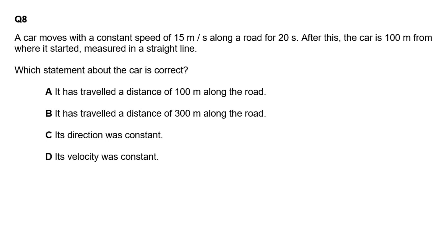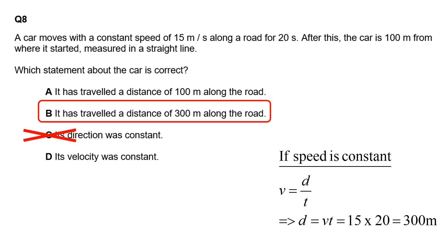The car moves with constant speed of 15 meters per second for 20 seconds. After this the car is 100 meters from where it started measured in a straight line. Which statement is correct? If the speed is constant over 20 seconds it should travel a total distance of 300 meters. We can rule out option C because if direction was constant it would have traveled 300, not be only 100 meters away. We can see it has traveled a total distance of 300 meters. A is wrong because we calculated 300, and velocity cannot have been constant because it must have changed direction to only be 100 meters away.